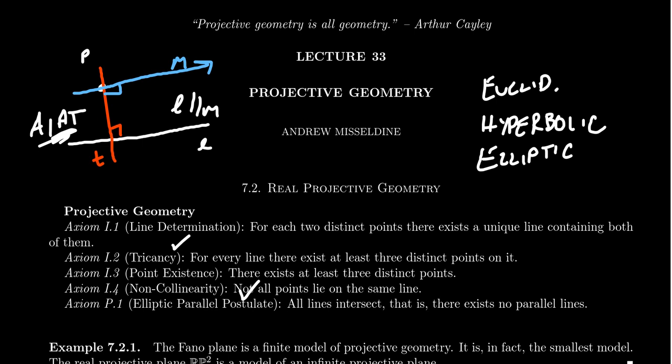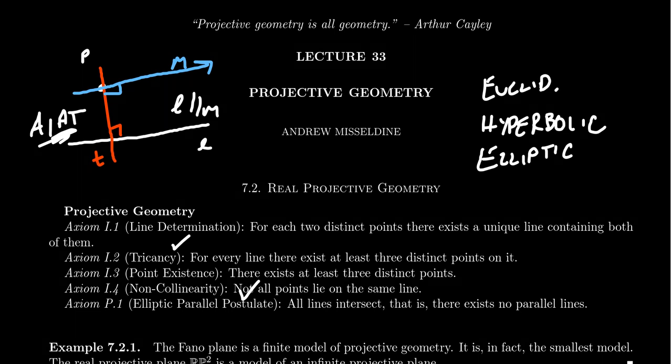Secancy said every line had at least two points on it, but for a projective geometry we require that every line has at least three points — this is called tricancy. Why require three? The issue is we don't want fan geometry to be considered a projective geometry. Tricancy is probably one of the most made-up words you'll see in this course — it's an amalgamation of 'triple' and 'secancy.' The reason for tricancy will become very apparent because of the massive proof we're going to do; it uses tricancy several times, and we wouldn't be able to do it on fan geometry.